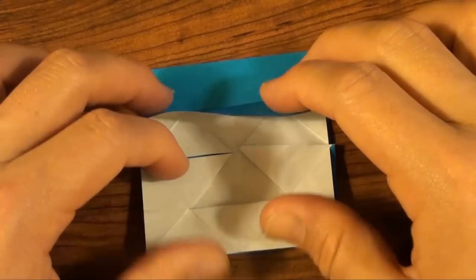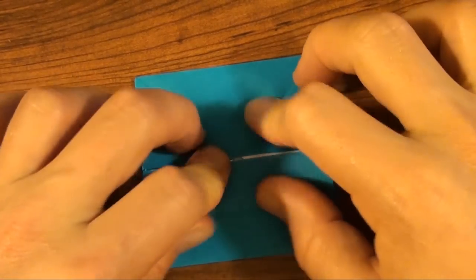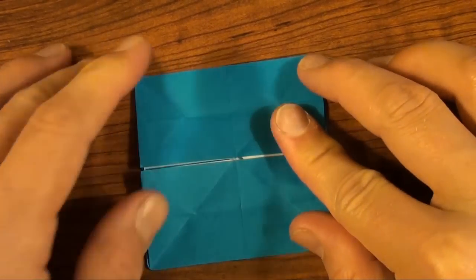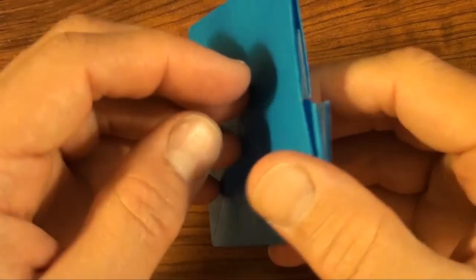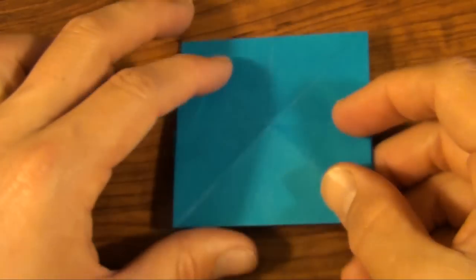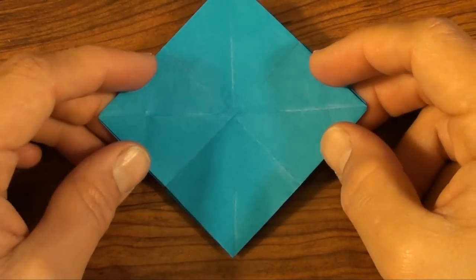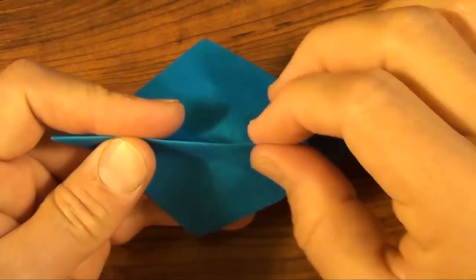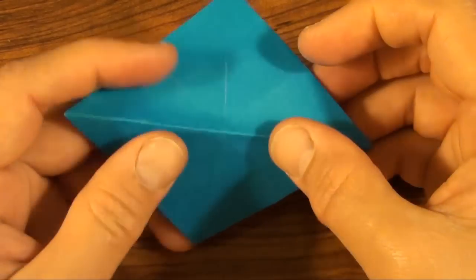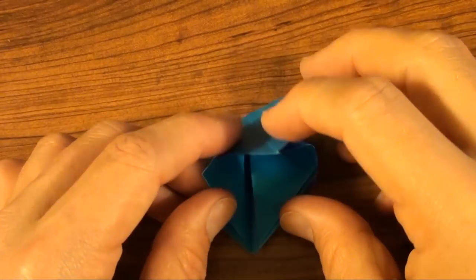And now bring the two raw edges back together. Like that. Pull it out. And turn over. And we are going to make a preliminary base or a square base. So the way it works is the diagonal is a mountain fold. And now bring the two edges together and flatten.